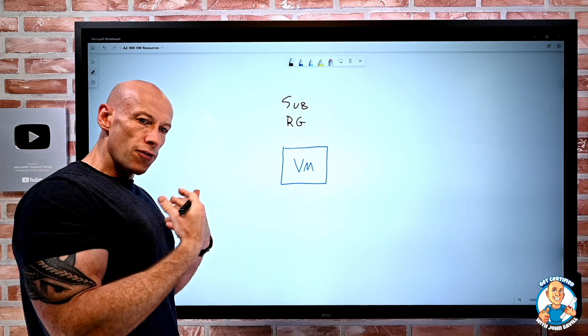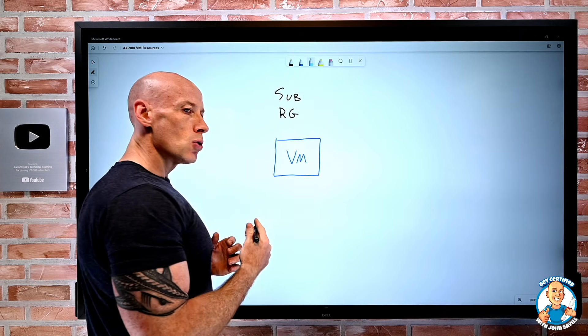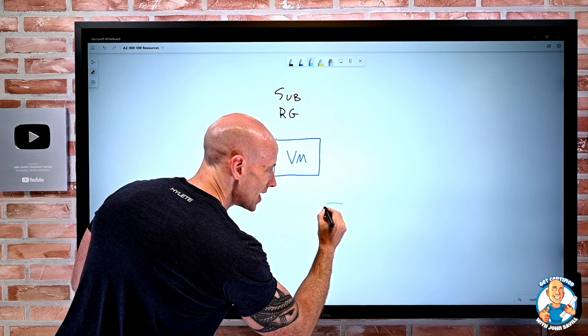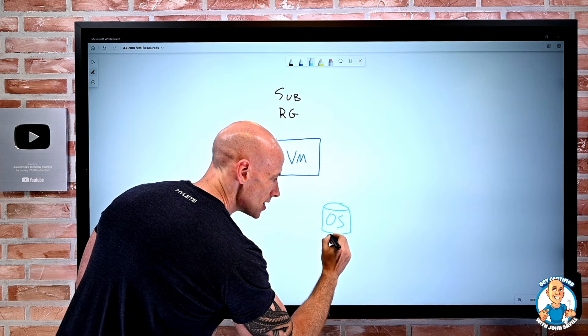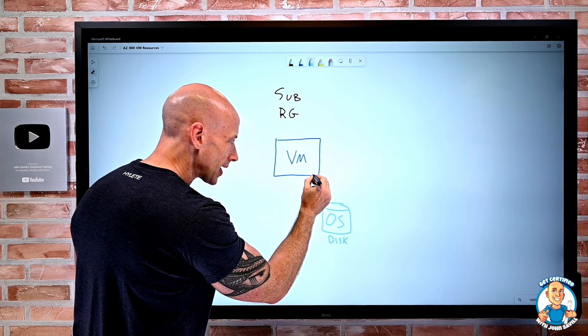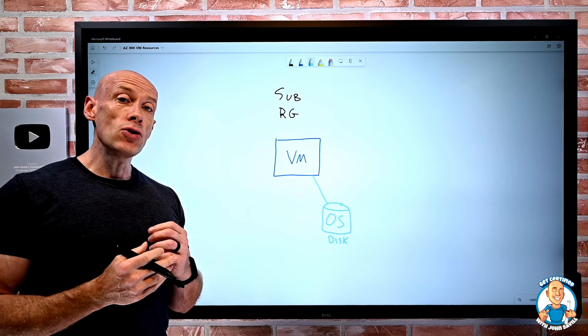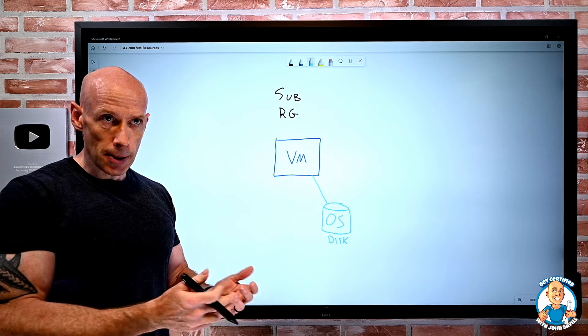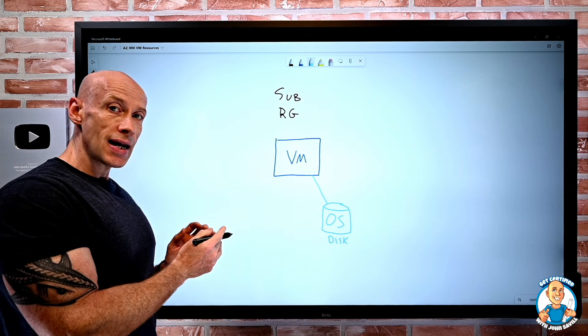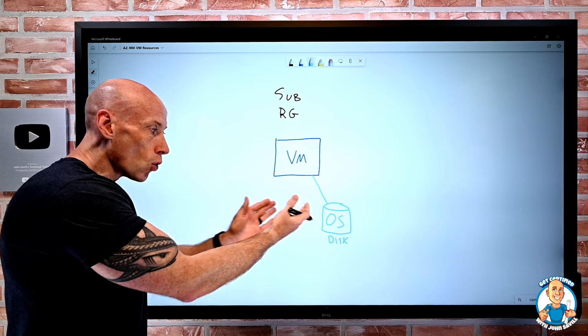Now if I think about the virtual machine, well it runs an operating system. So at minimum we're going to need an operating system managed disk. So this managed disk is itself an Azure resource that we're going to connect to that virtual machine. Now there is an exception to this. We can use something called an ephemeral disk. An ephemeral disk is not a managed disk. Instead it's using the capacity in the host for either cache or the temporary disk to store that operating system.